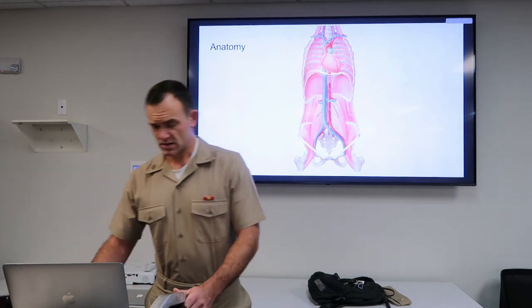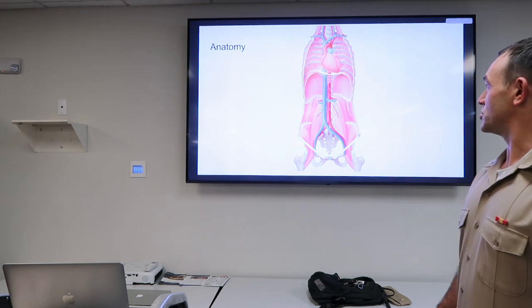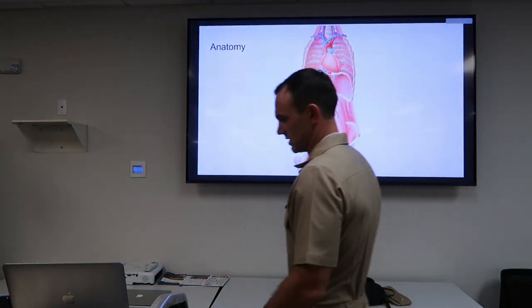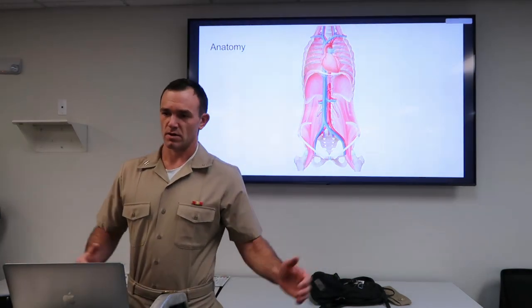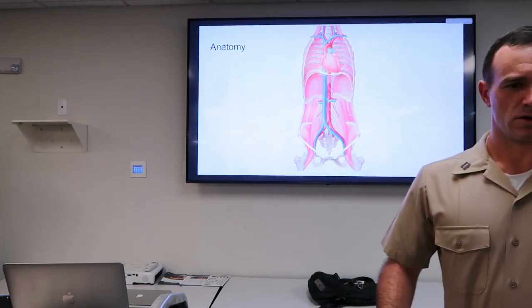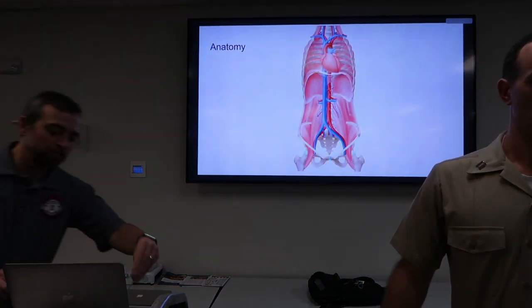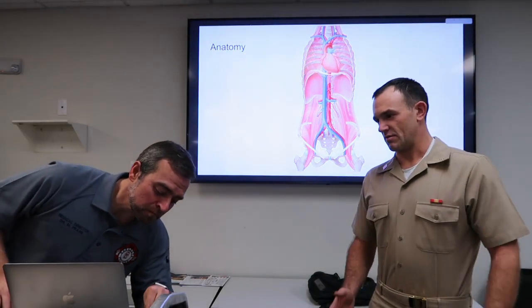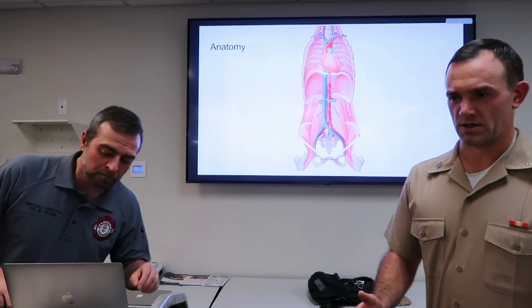Let's not forget about big blue and big red. The IVC is more to the right and the aorta is more to the left. Bad things that we worry about are more to do with the aorta on the left side of the abdomen. But obviously when you're examining a patient, you're not going to be able to tell which side it's on.